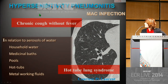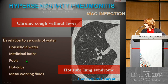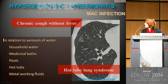The third presentation of atypical mycobacteria is hypersensitivity pneumonitis, which may be subacute or acute, or may lead to fibrosis. It has been proven to be related to aerosol of water, including household water, medicinal baths, pools, hot tubs — named hot tub lung syndrome — or metal working fluids. This is typically represented by ill-defined centrilobular nodules, here associated with a cavity, as surgically proven in this case.